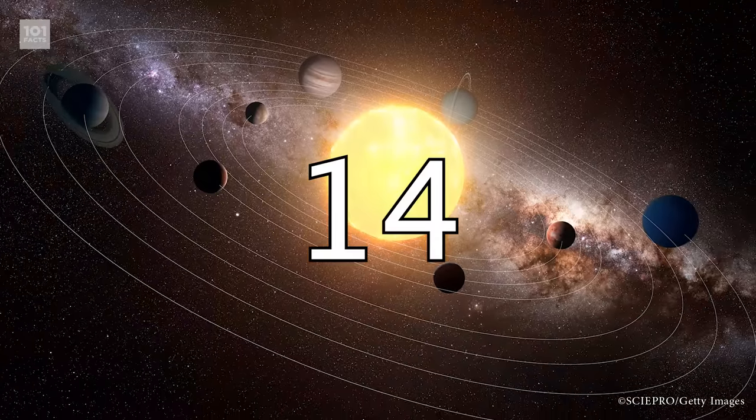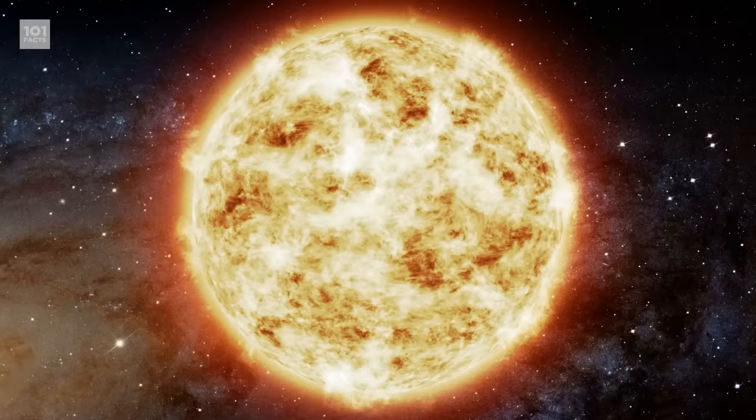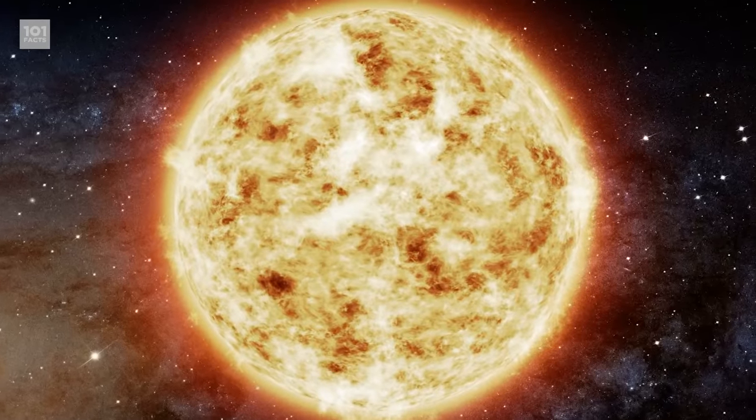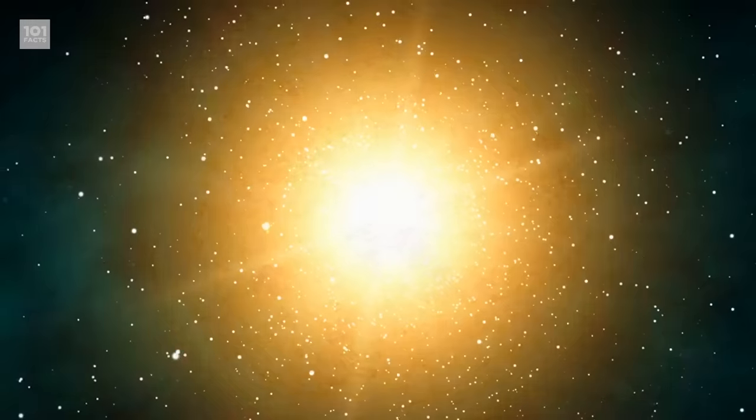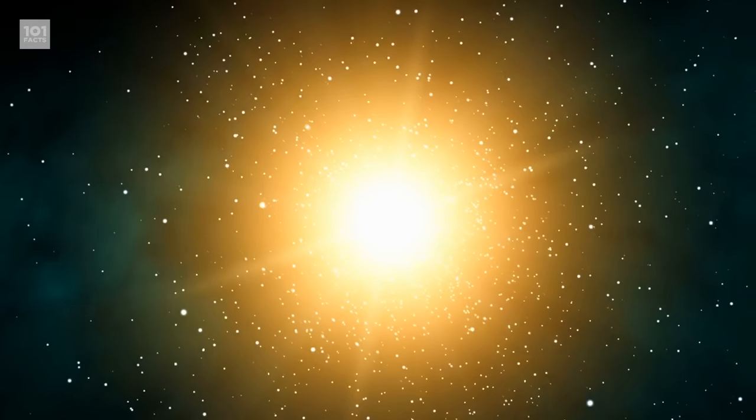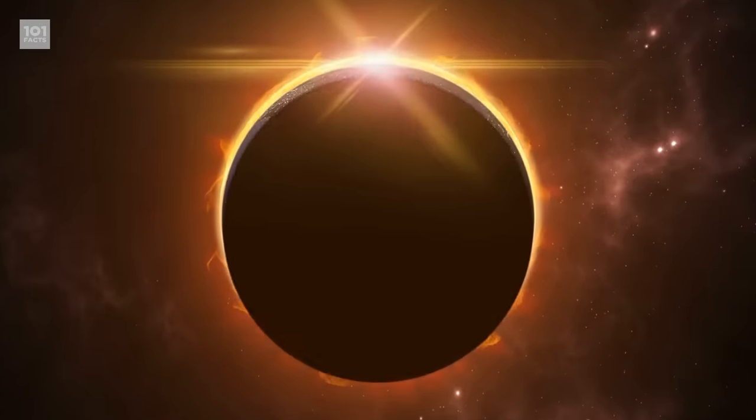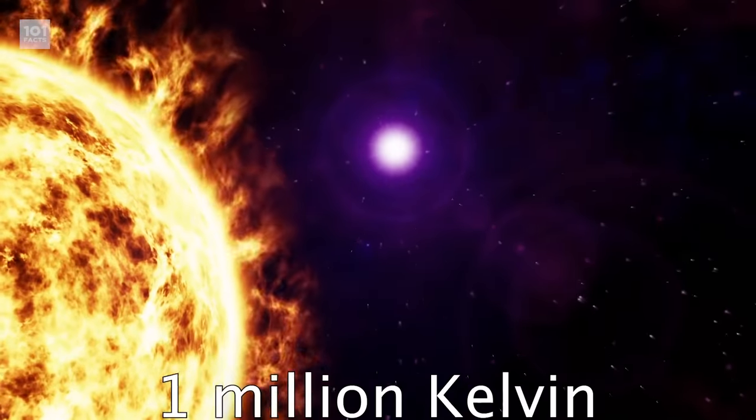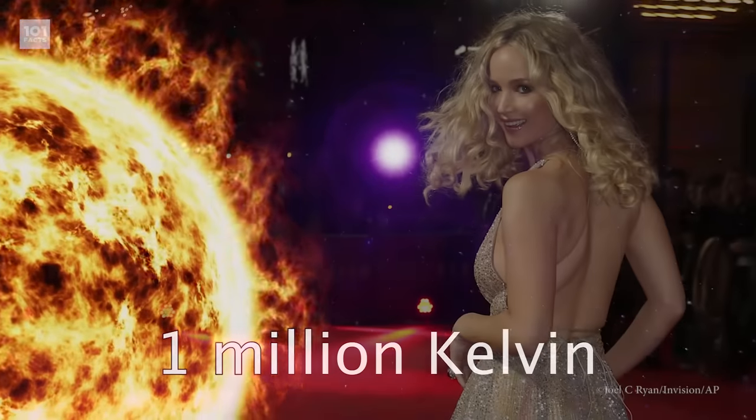Surprisingly, this isn't the hottest it gets, though. The outermost layer of the sun is called the corona. It's barely visible because of the brightness of the surface, but it's the bit you can see around the moon during a solar eclipse. Here, temperatures can reach around a million Kelvin. Jennifer Lawrence is hotter.